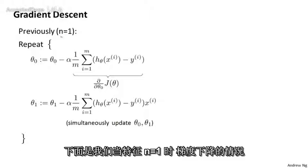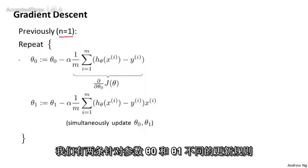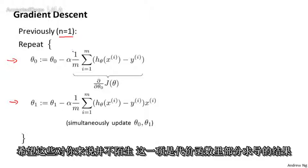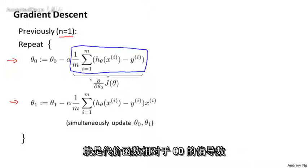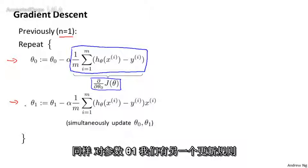Here's what we have for gradient descent for the case of when we had n equals 1 feature. We had two separate update rules for the parameters theta 0 and theta 1. And hopefully these look familiar to you. And this term here was, of course, the partial derivative of the cost function with respect to the parameter theta 0. And similarly, we had a different update rule for the parameter theta 1.